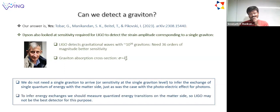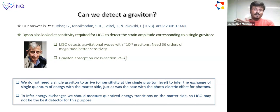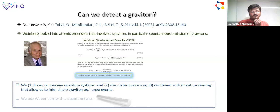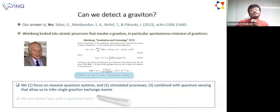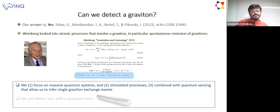One more important point is that to infer energy exchanges, LIGO is not the best choice of detector. We should be measuring energy on the matter side—energy transitions. To address Weinberg's comment that at the level of an atom the spontaneous and stimulated emission rates are very small, we focus on massive quantum systems and stimulated processes combined with quantum sensing, which can in principle allow us to infer single graviton exchange events. For this, we use Weber bars with a quantum test.